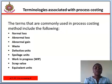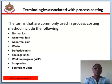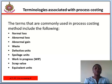Terminologies associated with Process Costing. The terms commonly used in the Process Costing method include the following: normal loss, abnormal loss, abnormal gain, waste, defective unit, spoilage unit, work-in-progress, scrap value, and equivalent unit.